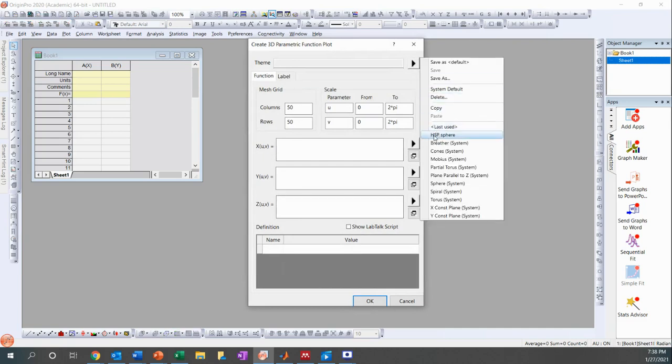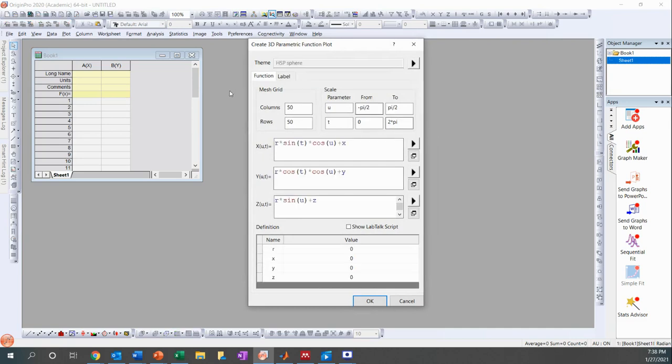I already have a HSP sphere parametric function plot kind of saved. But really you just need four values, R and the X, Y, and Z. And X corresponds to dispersive, Y corresponds to polar, and Z corresponds to H-bond. And so for each value, X, Y, and Z, you just multiply each by R. And then for X, you add X to the end. For Y, you add Y to the end. And for Z, you add Z to the end.